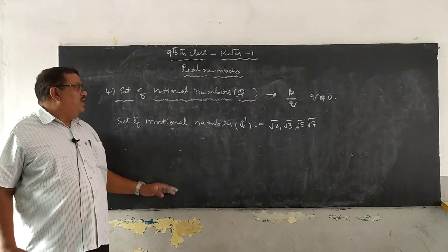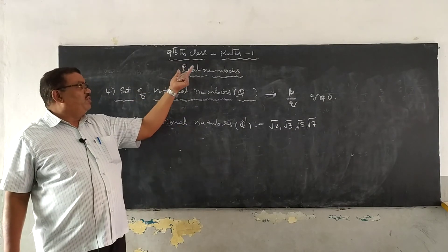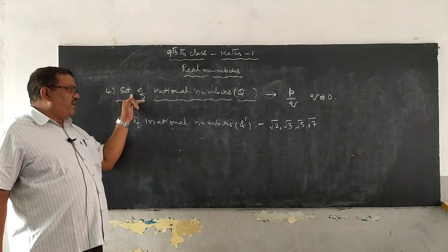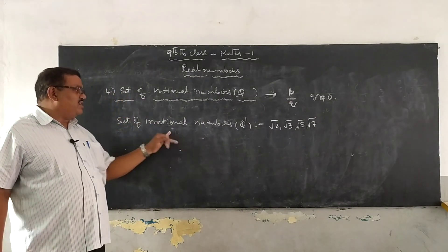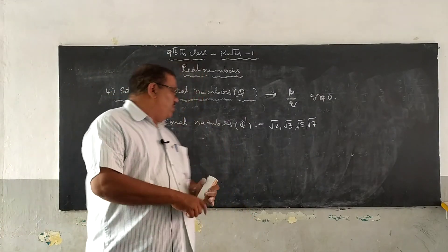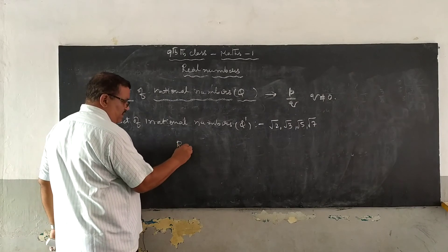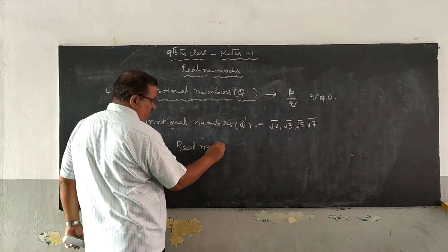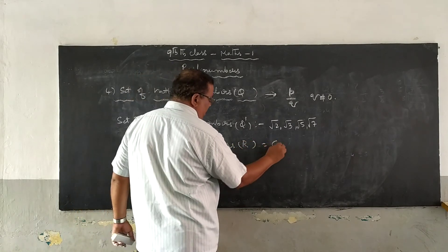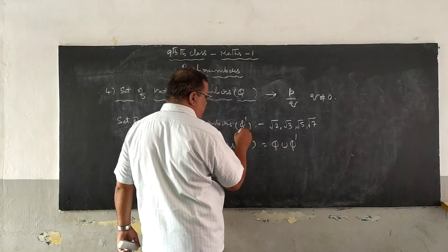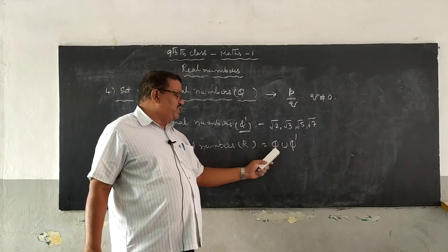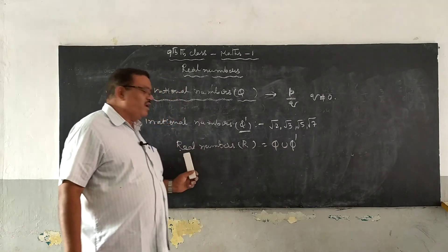Now, going to the main topic of the lesson — real numbers. The union of the set of rational numbers and the set of irrational numbers together are called real numbers. Real numbers are denoted by the letter R. It is denoted as Q ∪ Q'. Sometimes this is also denoted by S. Real numbers are the union of rational and irrational parts together.